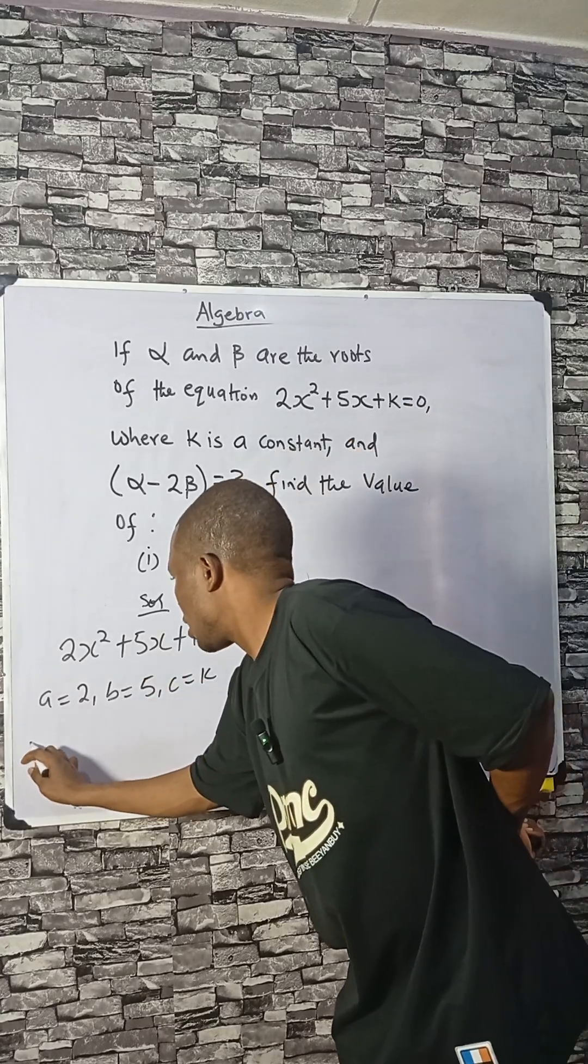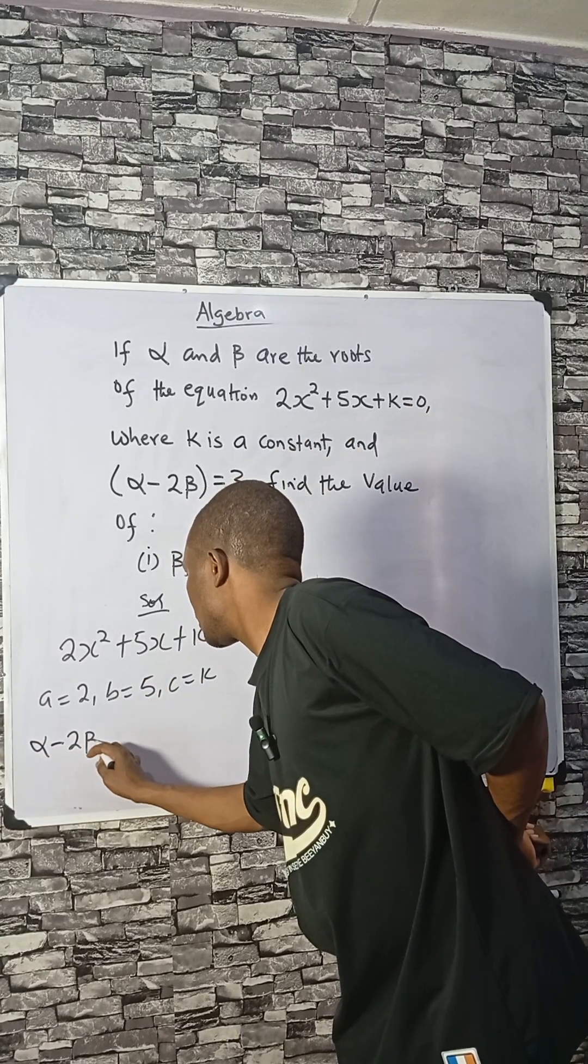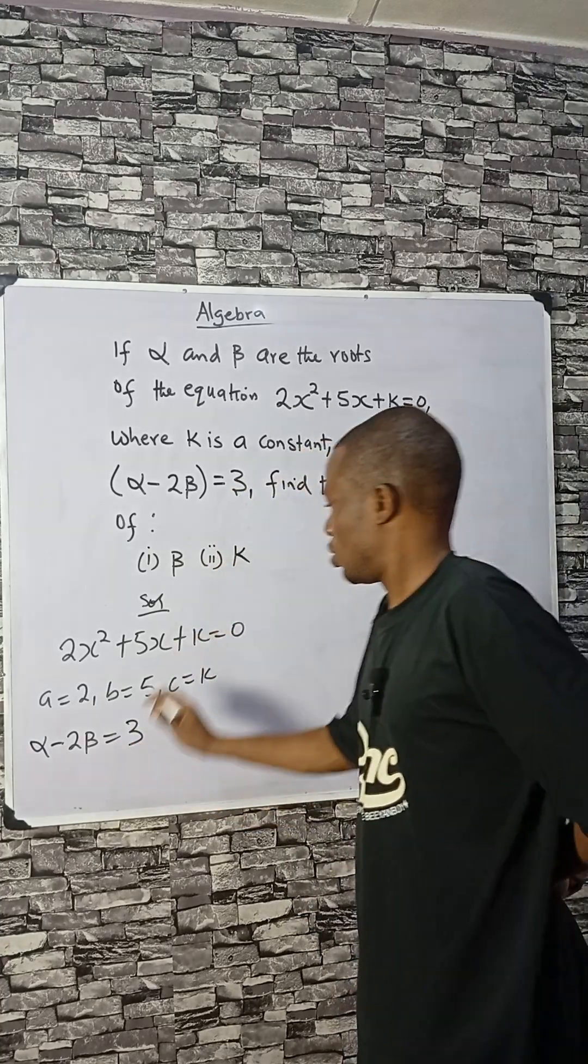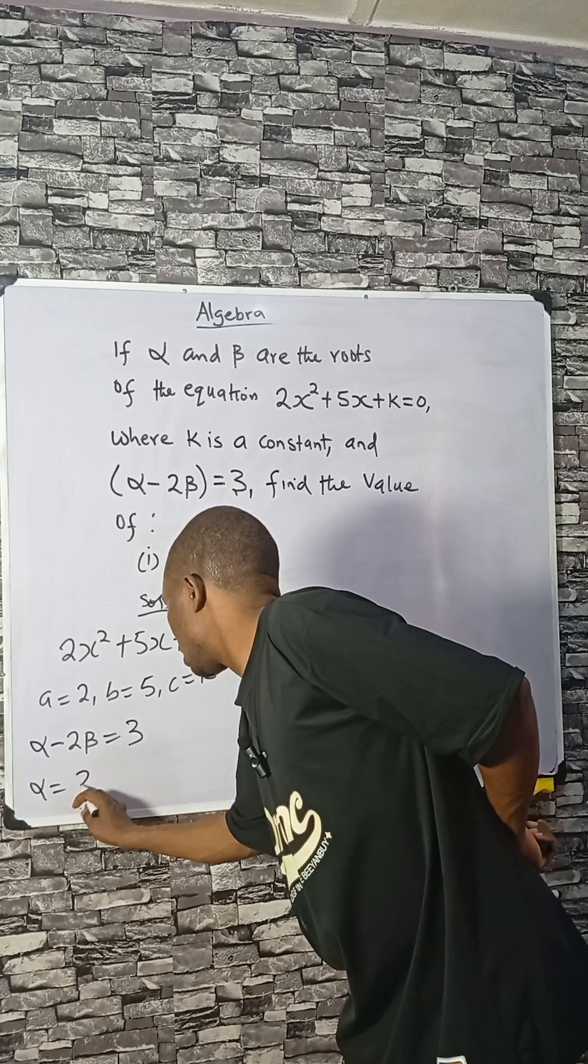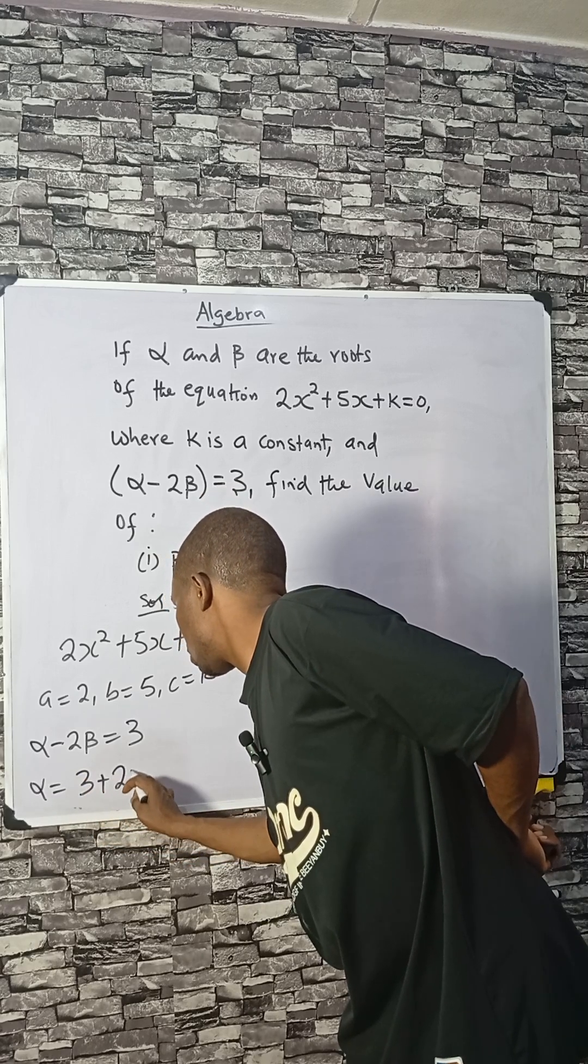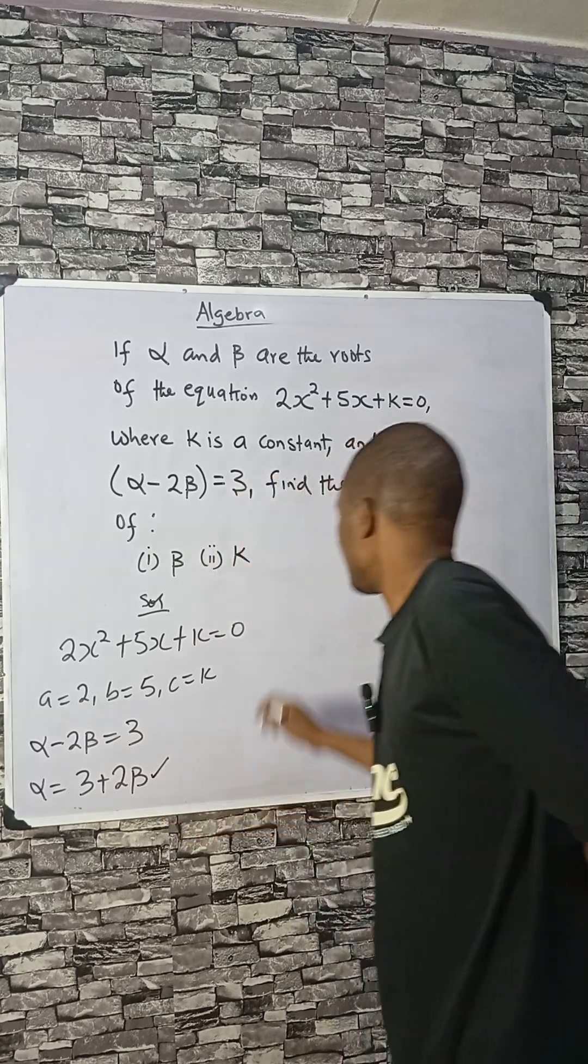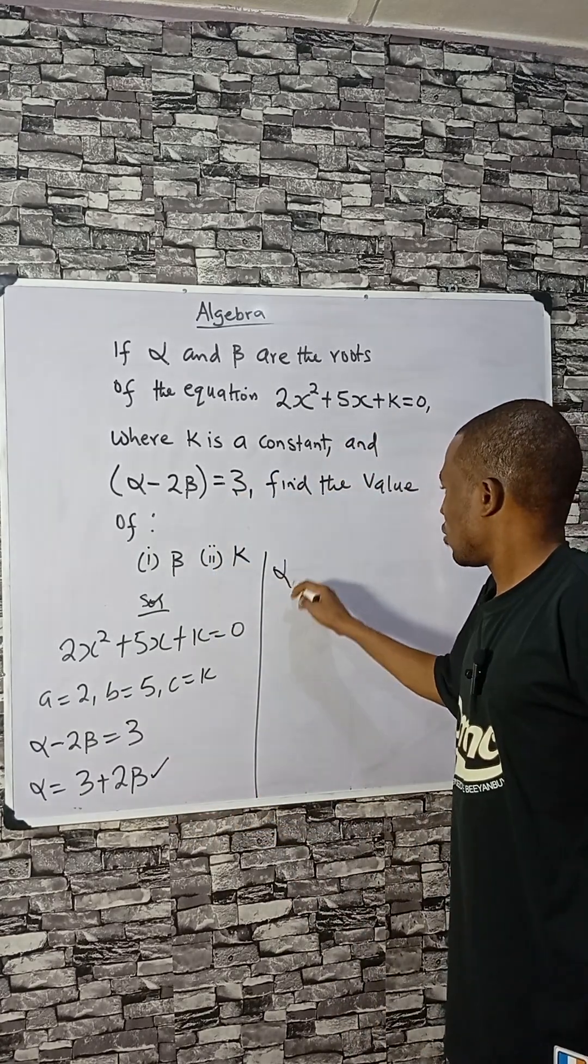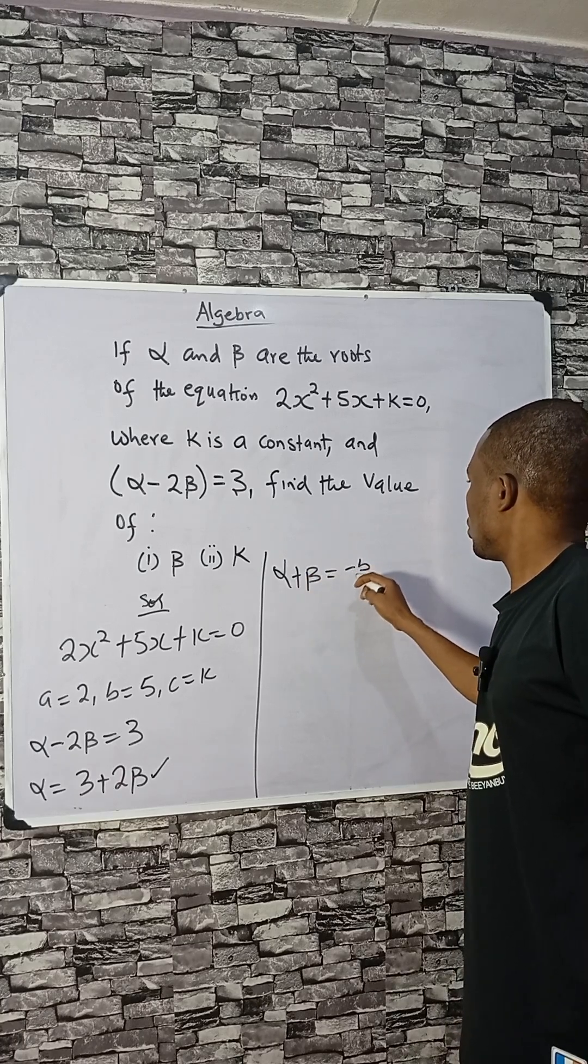Now we are told that alpha minus 2 beta equals 3 from the question. That means alpha, if we make it the subject, will be 3 plus 2 beta. The sum of roots, alpha plus beta, is given to be minus b over a.